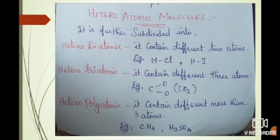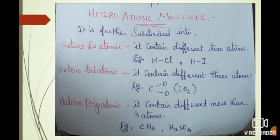Hetero-polyatomic molecule means it contains more than three different kinds of atoms. For example, CH4 methane and H2SO4 hydrogen sulphide. Hydrogen sulphide contains seven atoms: two hydrogen atoms, one sulphur atom, and four oxygen atoms.